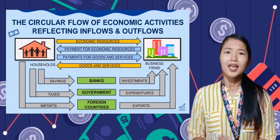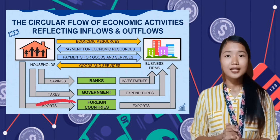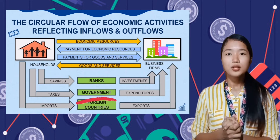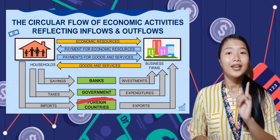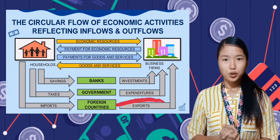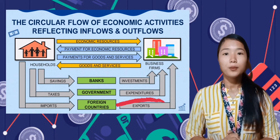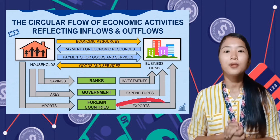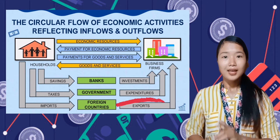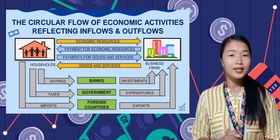If the household pays taxes, then the money intended to buy goods and services will again be reduced. However, if the government uses the paid taxes for the right projects — for example, road widening — this will serve as government expenditure, and the money will revert back to the basic economic unit. For example, the government will purchase hollow blocks, steel bars, and other construction supplies from a business firm, such as a hardware store nationwide. So again, the circular flow continues to function well.